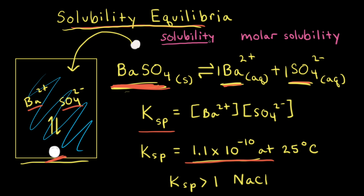The solubility of a substance refers to the amount of solid that dissolves to form a saturated solution, and the units for solubility are usually in grams per liter. Molar solubility refers to the number of moles of the solid that dissolve to form one liter of the saturated solution, so the units would be moles per liter, or simply molar.